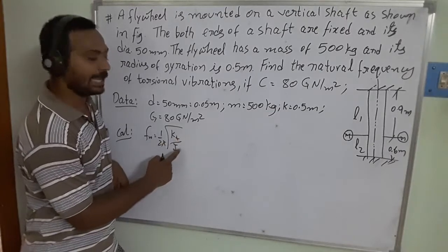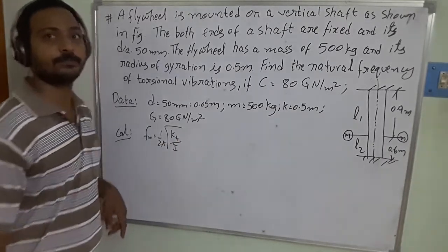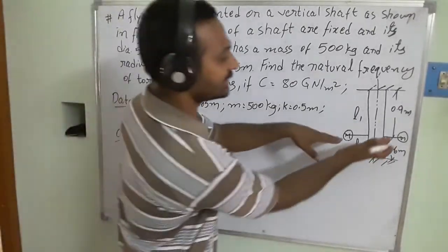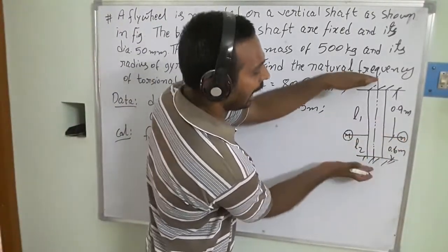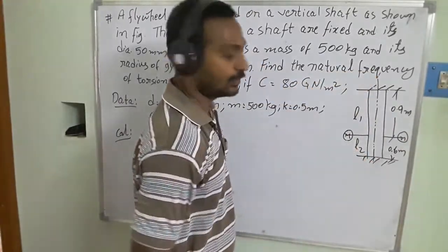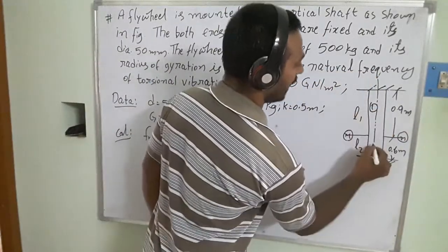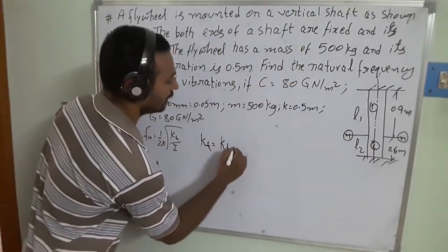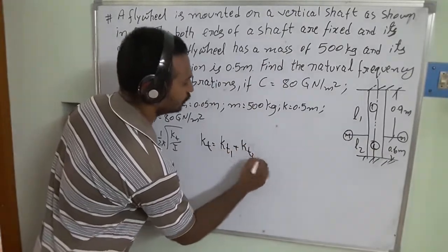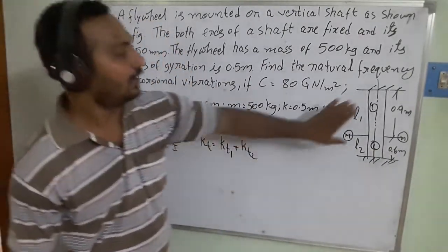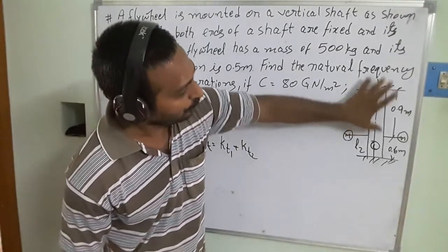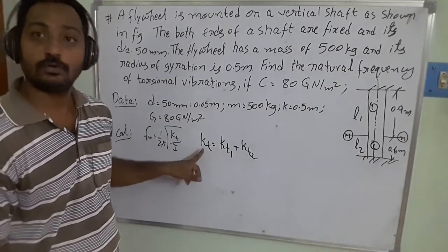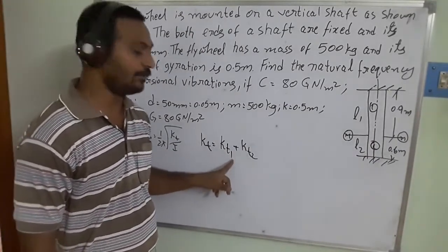The total torsional stiffness kt is not a single value in this case. The flywheel is located at distance l1 from one fixed end and l2 from the other. So we consider side 1 and side 2, and the total stiffness is kt1 + kt2 — the summation of torsional stiffness above and below the flywheel.